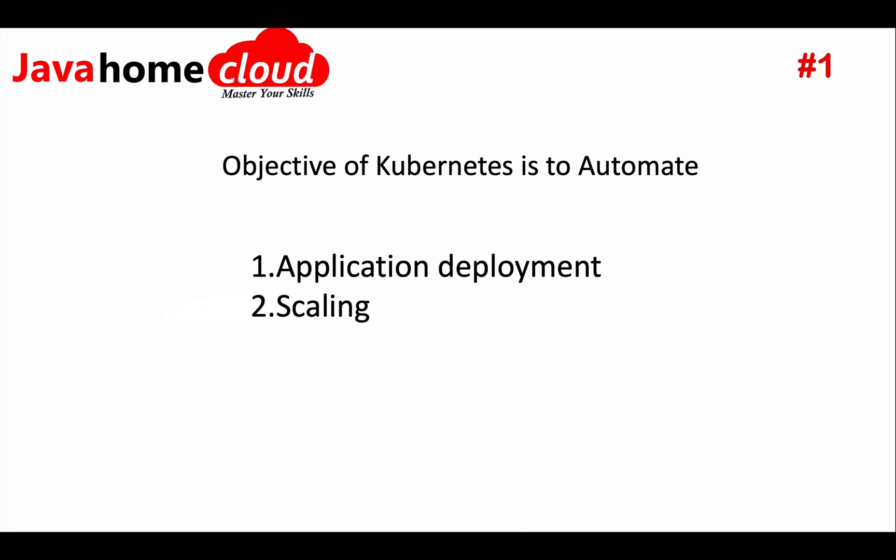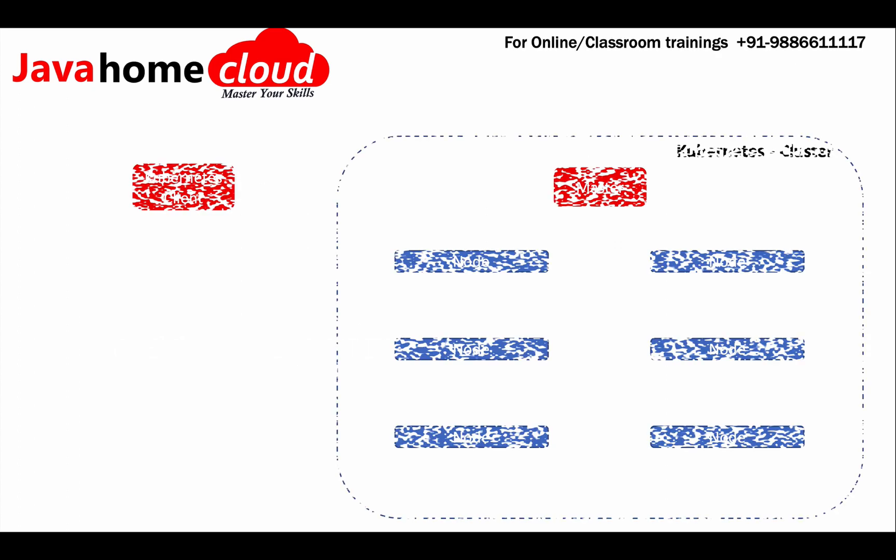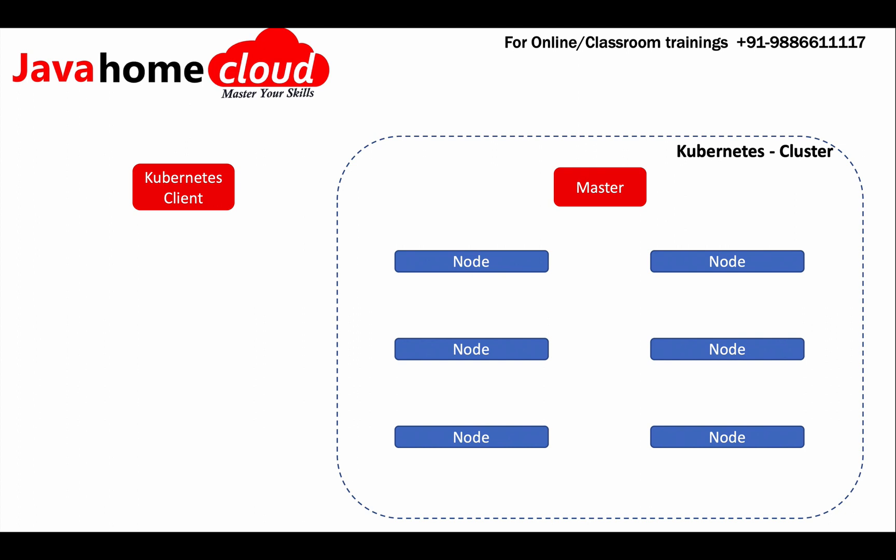It also takes care of maintaining the cluster. To have a brief overview of what exactly this does — here is a picture where we see a Kubernetes cluster having six nodes: one master, and for interacting with the Kubernetes cluster we have a Kubernetes client.